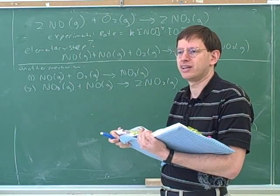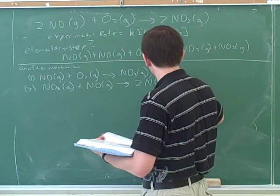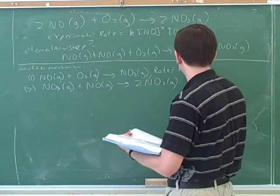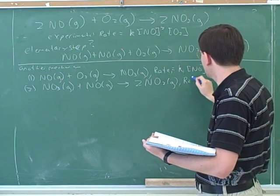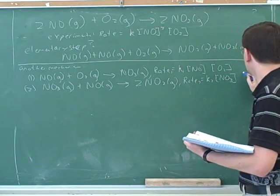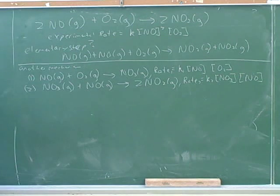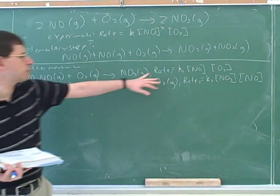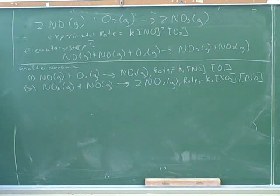Now we know that these match up to the overall reaction. What do we need to do next to test whether this matches this? Write the rate laws. And then see which one matches so you know the slow step. What would be the rate law for the first step? K1 times NO concentration times O2. And what would be the rate law for the second step? K2 times NO times NO3. Those would be the rate laws for the elementary steps. Now, if this is the true mechanism and these are their rate laws, what would be the rate law for the overall reaction? So far we don't know, because we don't know which is the slow step.